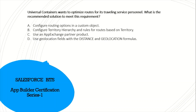Universal Container wants to optimize routes for its traveling service professionals. What is the recommended solution? Configuring a routing option with a custom object is not possible, and configuring territory hierarchy and rules based on territory is just static territory management. Using geolocation fields with distance gives you location but cannot optimize routes. The correct answer is C: use an AppExchange partner product, which can optimize routes for traveling professionals.